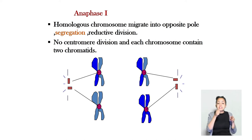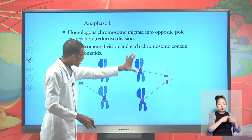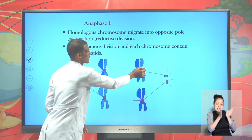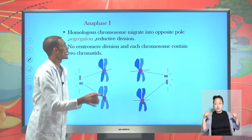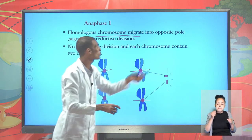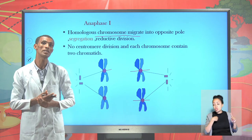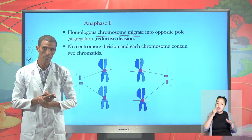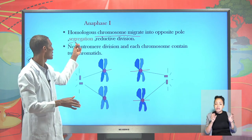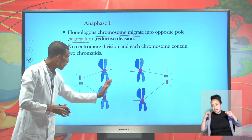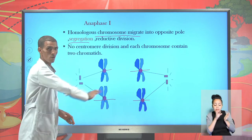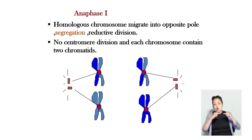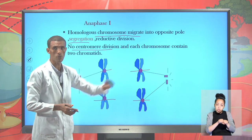Another important phase of meiosis one is anaphase one. During anaphase one, spindle fibers move the homologous pairs — which are still attached by their centromeres — to opposite poles of the cell. When the homologous pairs become pulled and migrate to opposite poles, we say it is anaphase one. There is no separation of the centromere yet; the centromere still joins the copy and the original together as they move to opposite poles.